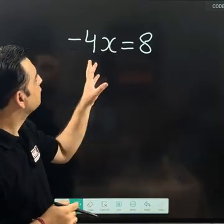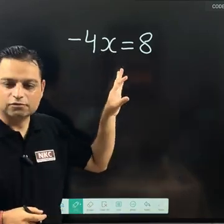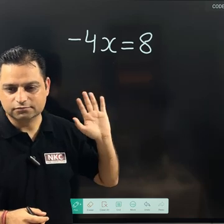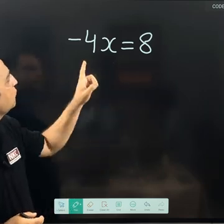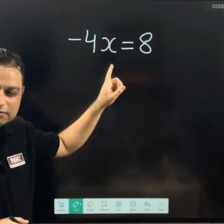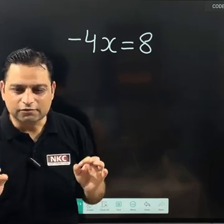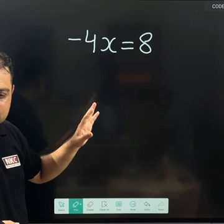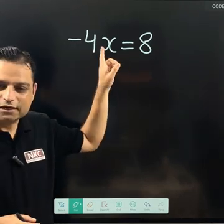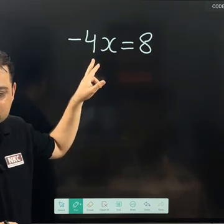We are going to start from this particular -4x = 8 question. The problem lies when negative sign comes along with x; then most of the students face problems. So I am going to tell you a very easy way. Since we need to find the value of x, that means I want to get rid of this -4.